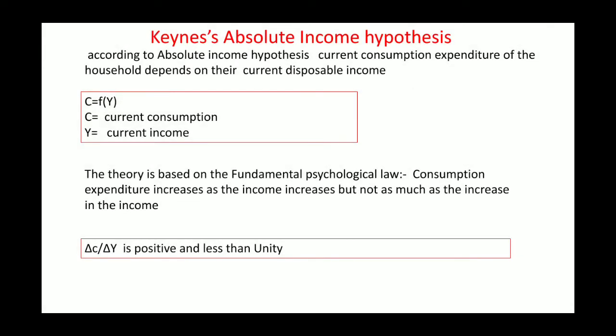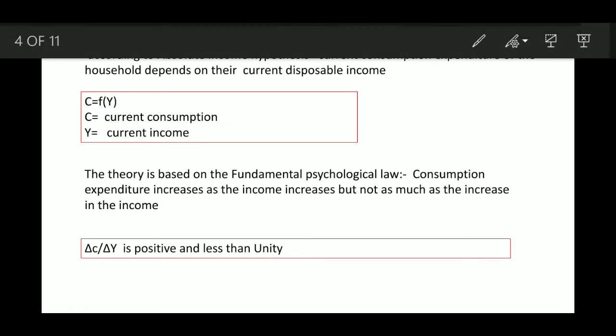Keynes's Absolute Income Hypothesis states that current consumption expenditure of the household depends on their current disposable income — that is, consumption expenditure is directly proportionate to income. In equation form: C is a function of Y, where C means current consumption and Y means current income. The Keynesian theory is based on the fundamental psychological law.